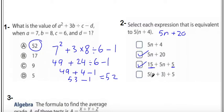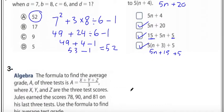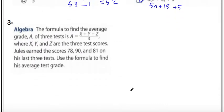Another option shows 5n plus 15 plus 5, which gives 5n plus 20, so that is also correct. We have three choices that are right.